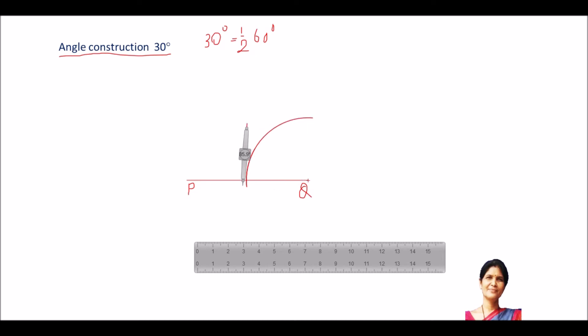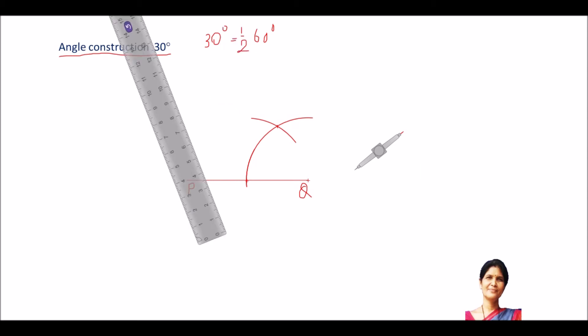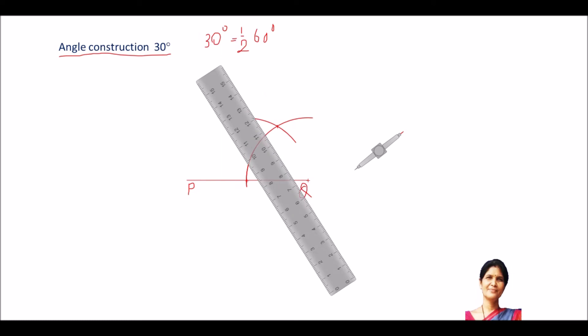Next is, I will place the compass at the intersection of the arc and the line. I will draw another arc without disturbing the arc or radius of the compass. So, now, when I will join this intersection point with Q, I will get the angle 60 degree. So, I am taking the scale, I will join these two points. One is intersection of this arc and another is Q.